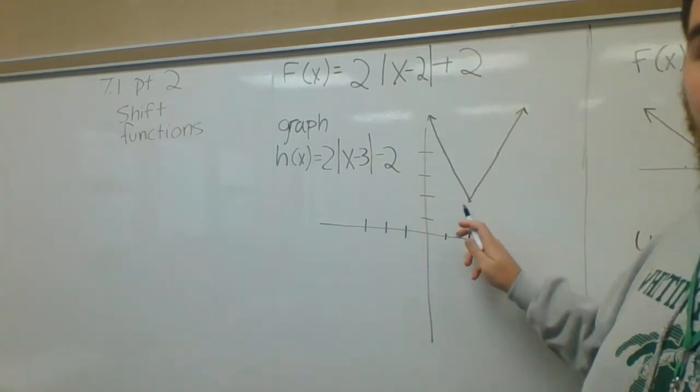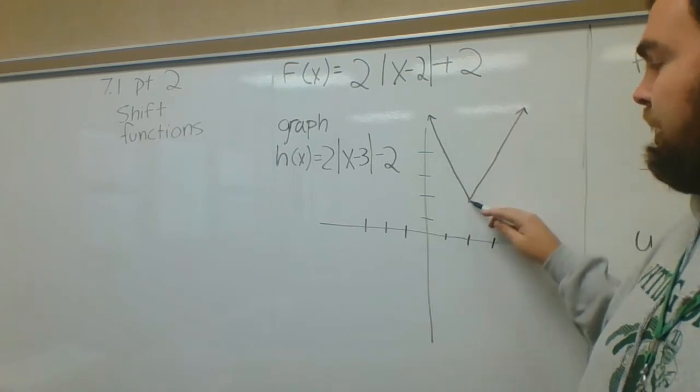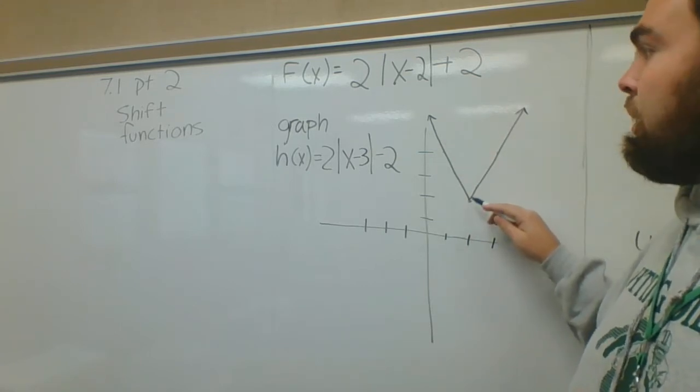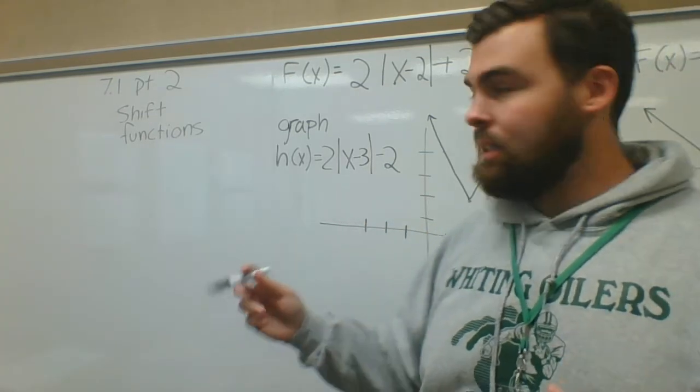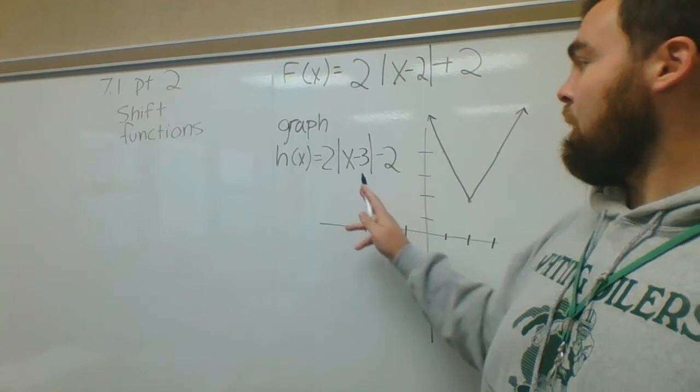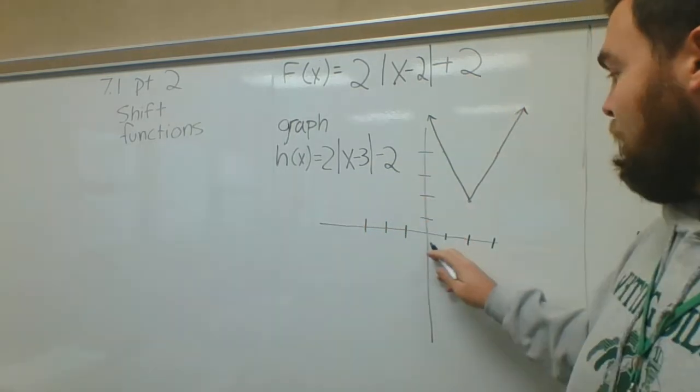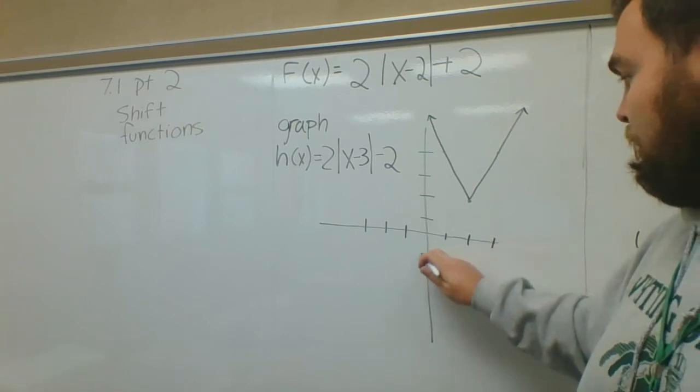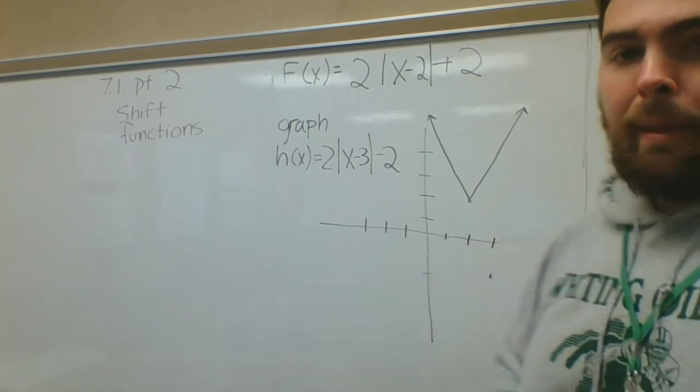They just want you to realize that this is right 2 and up 2, so this goes right 2 up 2 for the vertex. For absolute value you get a V, it's a vertex. This is gonna be the same exact shape of graph except instead of going right 2 up 2, it's gonna go right 3 down 2.